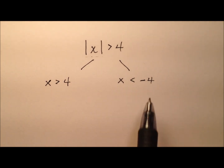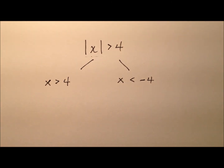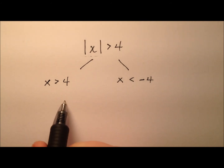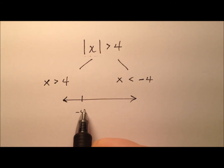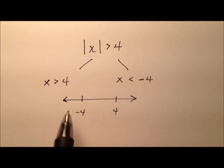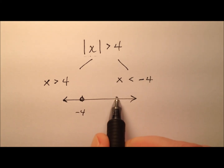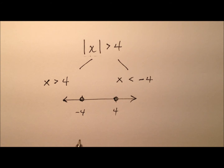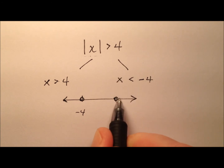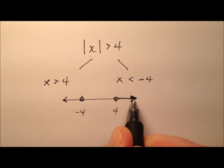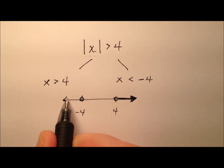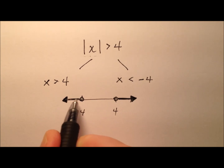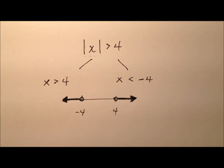There's no solving to be done here because x in both cases is already isolated. So now it's just time to graph this inequality. Here's my number line — I'll put negative 4 down here and positive 4 up here. I'll be using open circles for both because it's greater than and less than, and there are no equal-to's involved. For x is greater than 4, it's going to go from positive 4 and move to the right. And for x is less than negative 4, it'll move to the left.